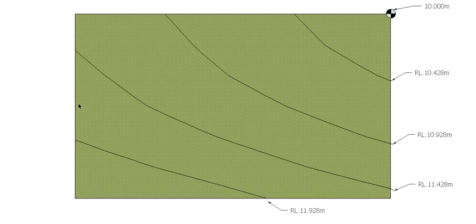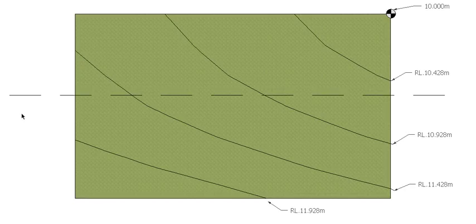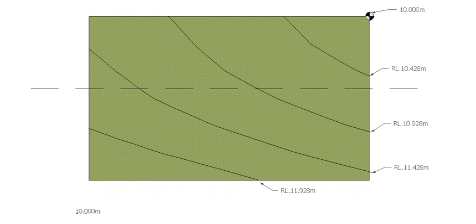What we need to do firstly is pick where we want to get a cross-section through this site. You can pick a spot — it could be straight down the middle of the site, it could be in line with a footing or a pipeline or something that you want to run. We just need to pick a point through there, and we've done that — that's the dotted line there.